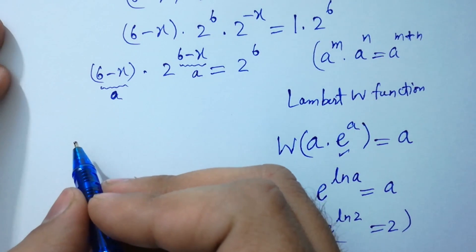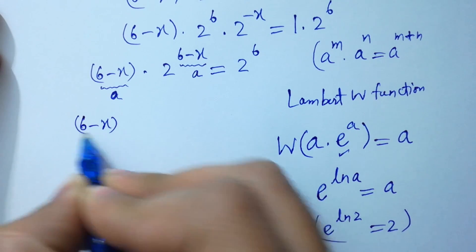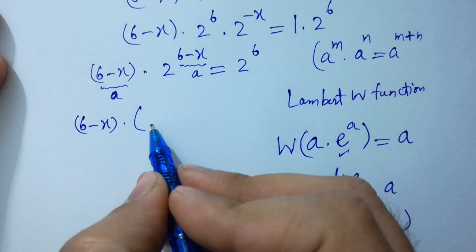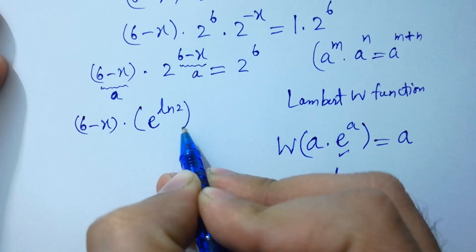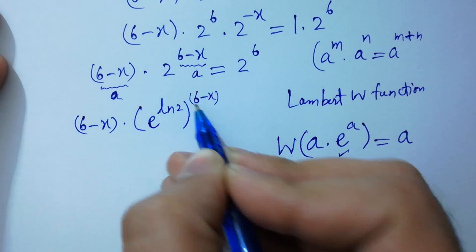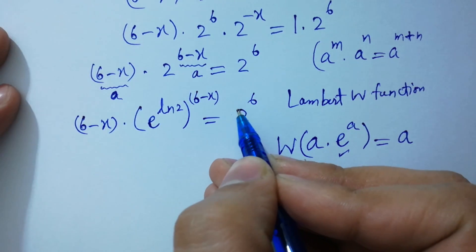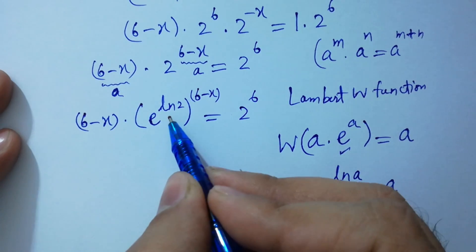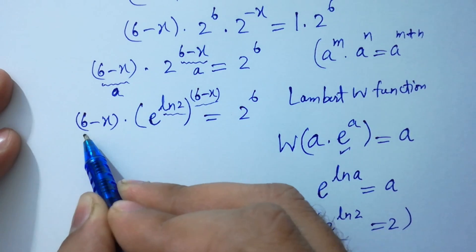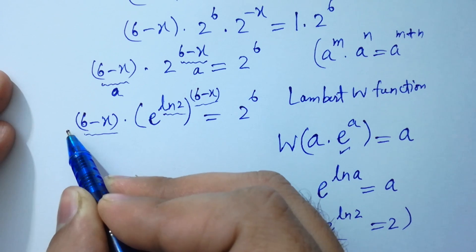So I can write: 6 minus x times e to the power natural log 2, raised to the power 6 minus x, equals 2 to the power 6. Now here we have ln 2 and 6 minus x in the exponent, and 6 minus x as the base factor. We need natural log 2,